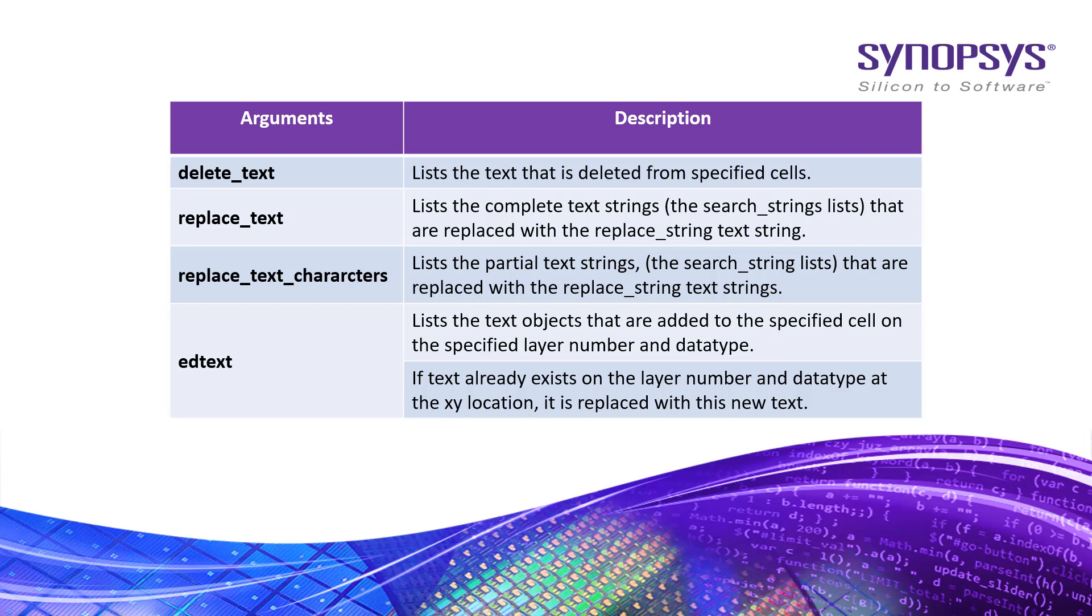The replace_text_characters argument lists the partial text strings that are replaced with the replace_string text strings. The edtext argument lists the text objects that are added to the specified cell on the specified layer number and datatype.